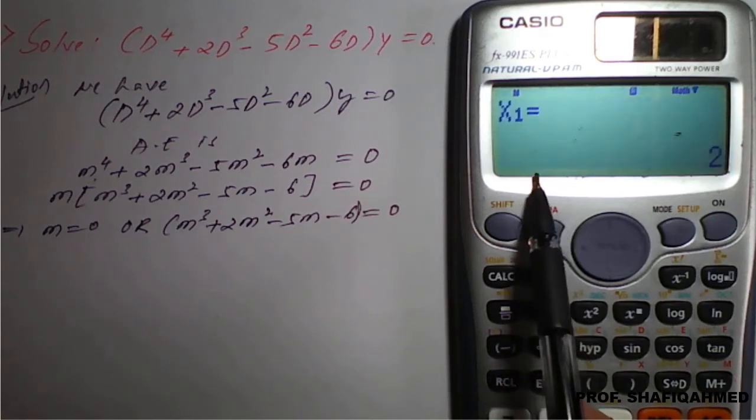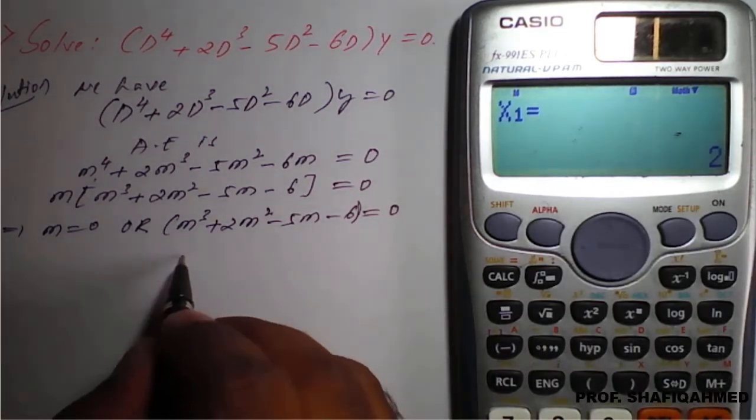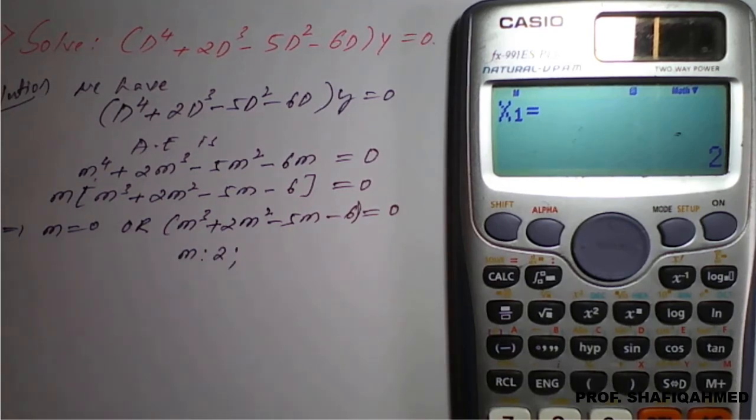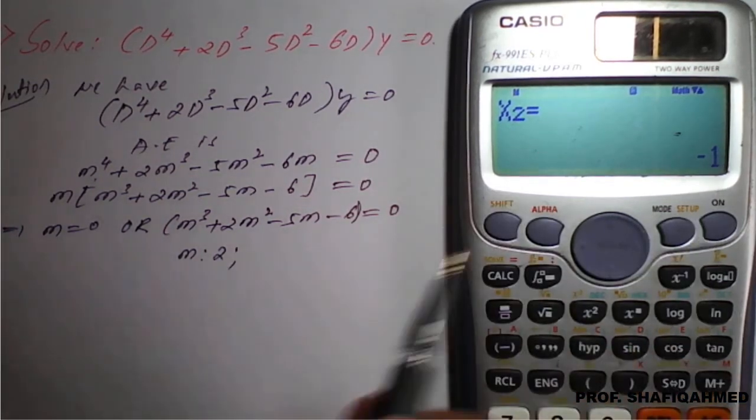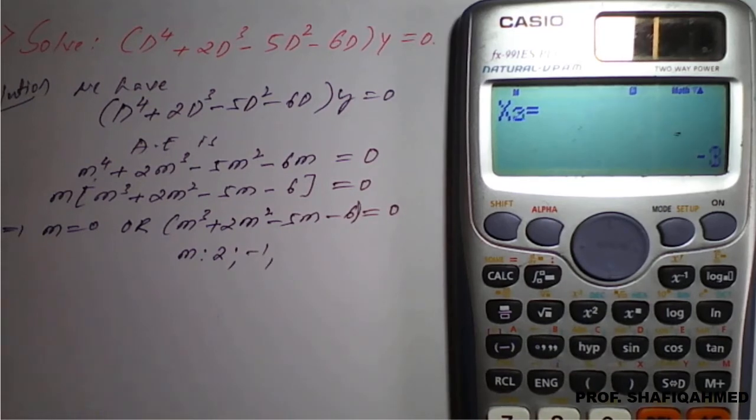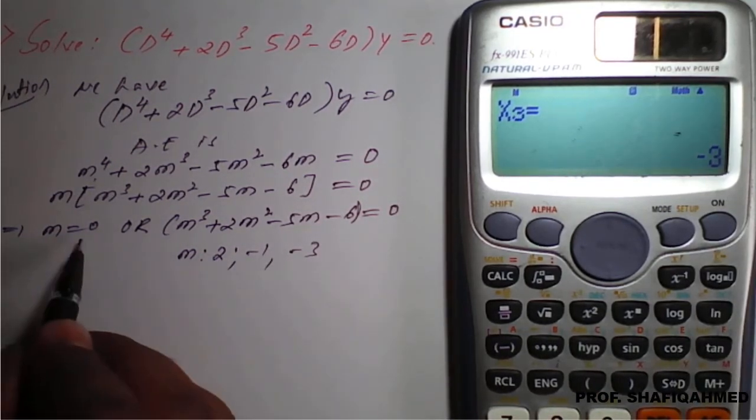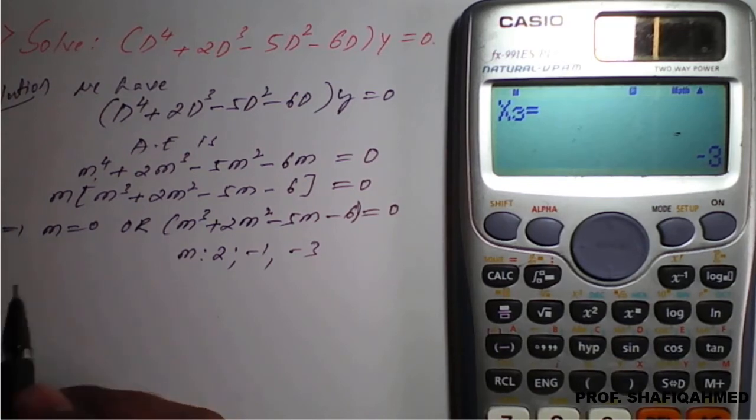Equal to sign. The first root we will get is 2. Second root we will get as minus 1. Third root we will get as minus 3. So 1, 2, 3 plus one more here, 0.